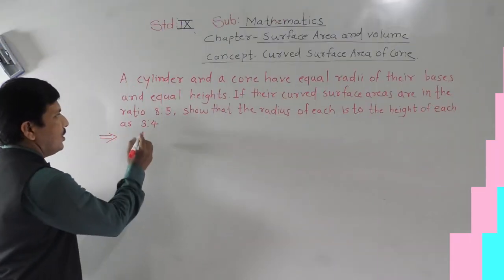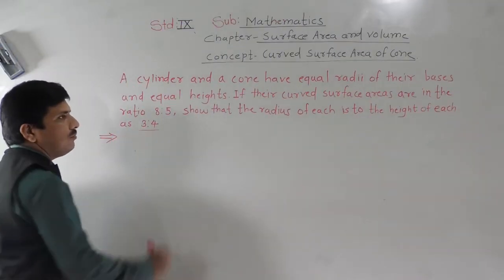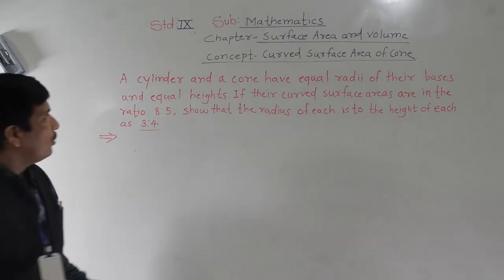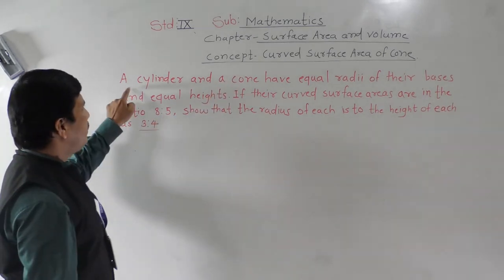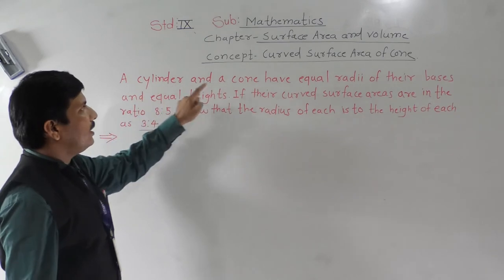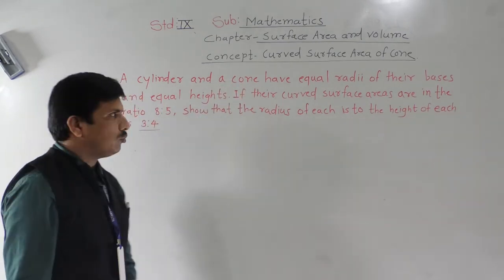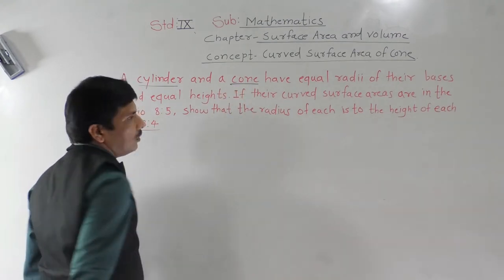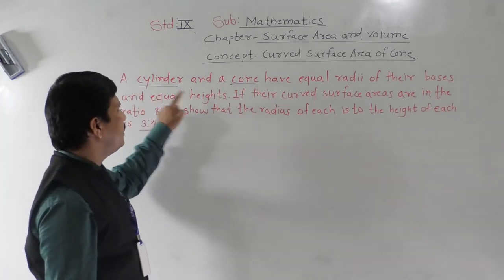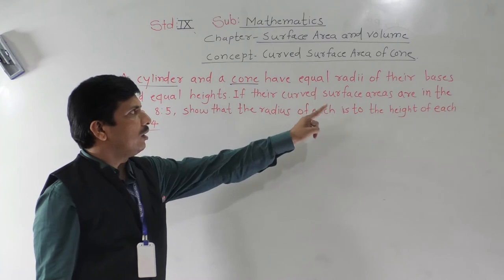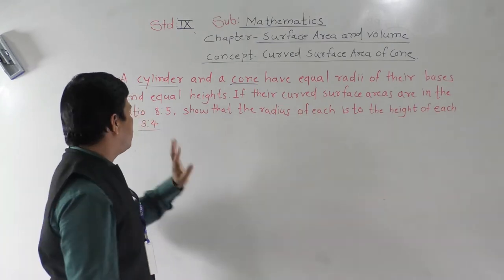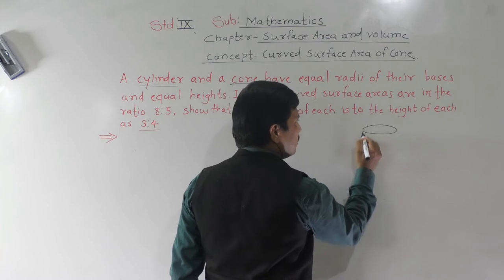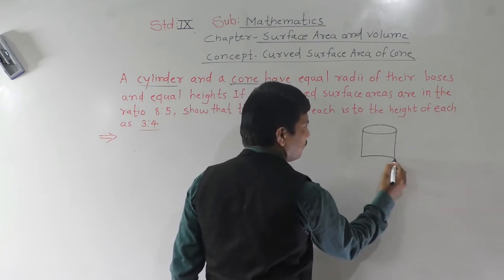The next problem: a cylinder and a cone have equal radii of their bases and equal heights. If their curved surface areas are in the ratio 8 to 5, show that the radius of each is to the height of each as 3 is to 4. We have two three-dimensional figures — a right circular cylinder and a right circular cone — with equal base radii (both taken as r) and equal heights (both taken as h).